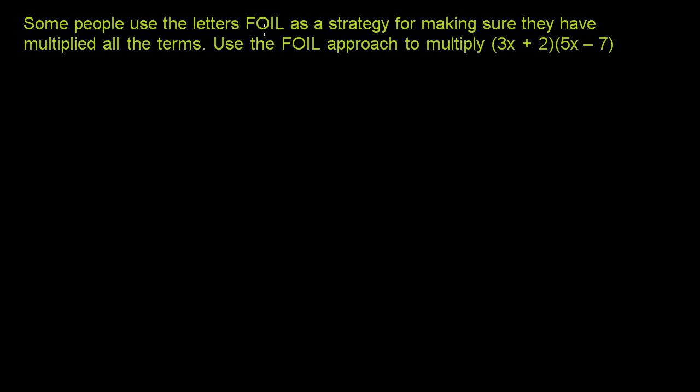Some people use the letters FOIL as a strategy for making sure they have multiplied all the terms. Use the FOIL approach to multiply (3x + 2)(5x - 7).